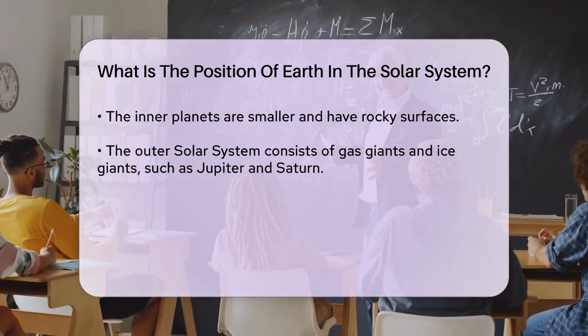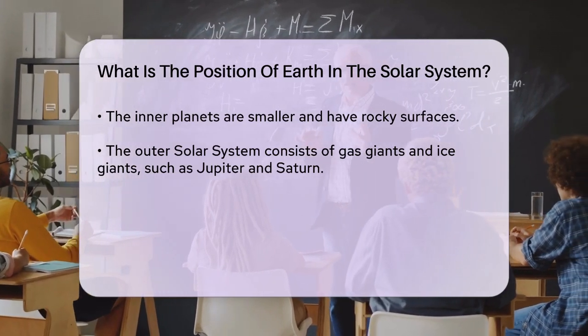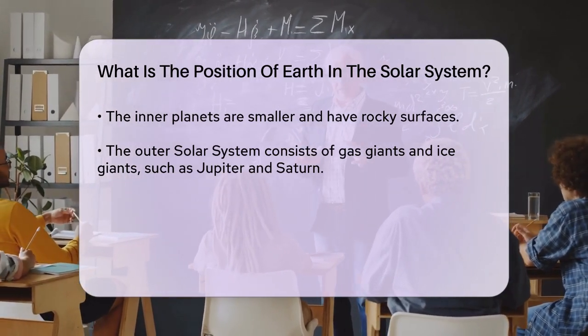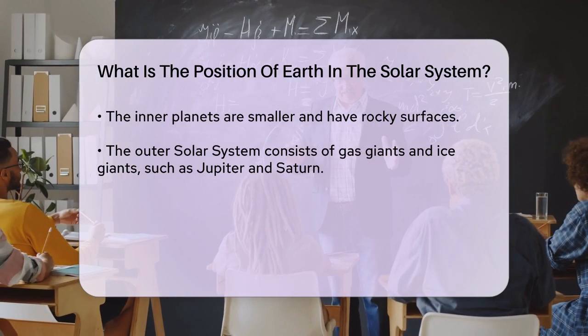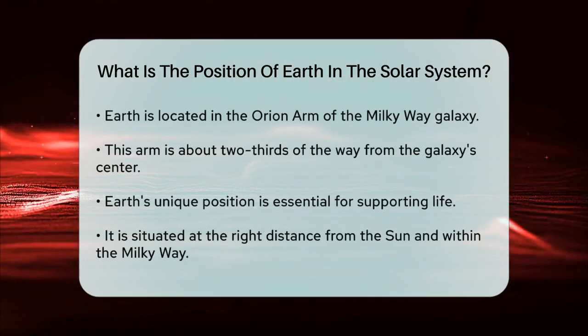Earth is also located in one of the spiral arms of the Milky Way galaxy known as the Orion Arm. This arm is about two-thirds of the way out from the center of the galaxy.